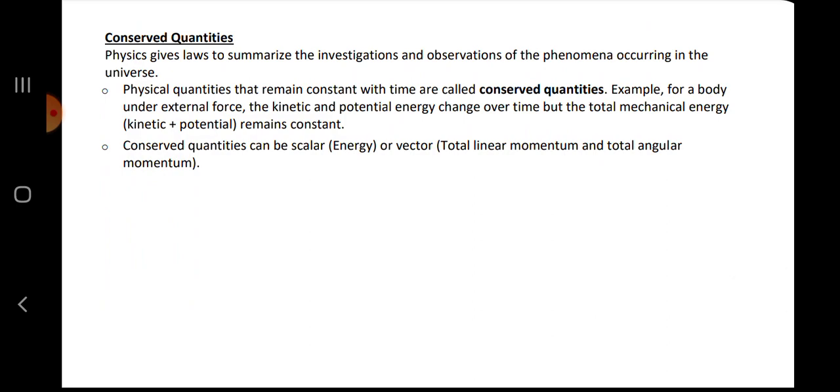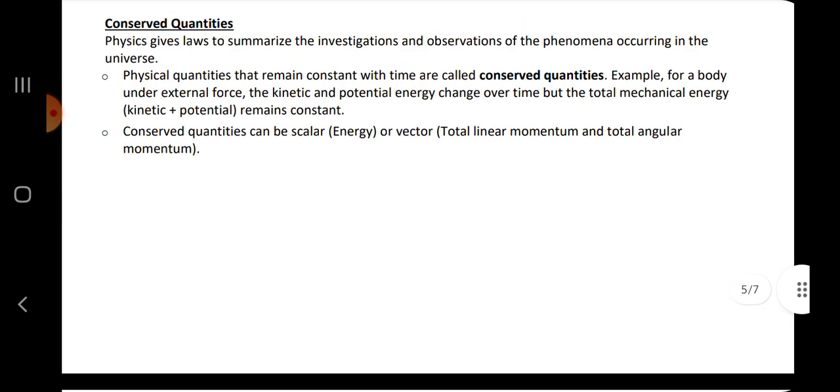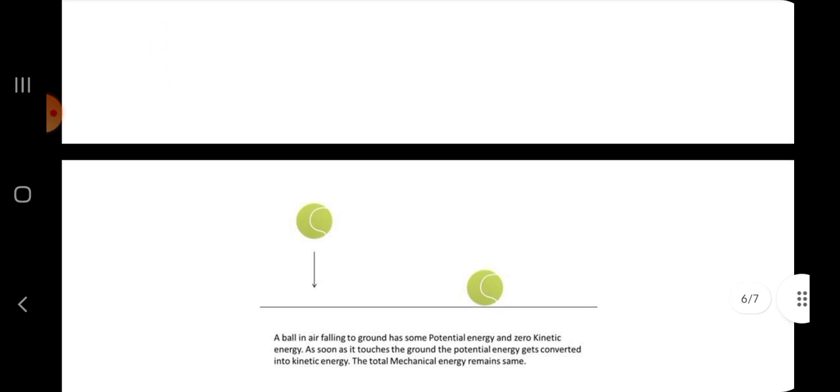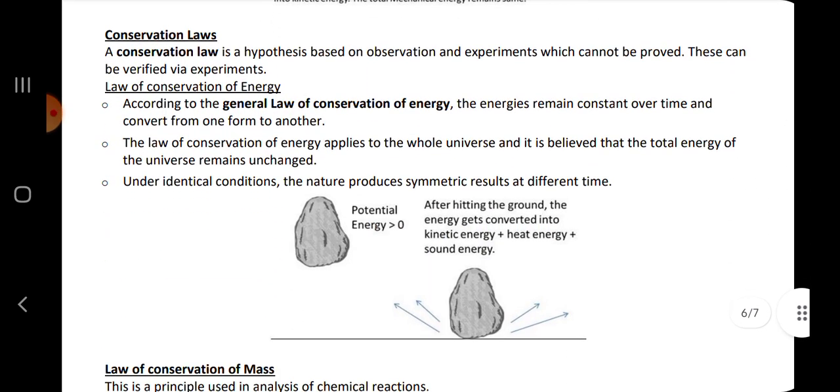Conserved quantities. Physics gives laws to summarize the investigation and observation of the phenomena occurring in the universe. Physical quantities that remain constant with time are called conserved quantities. Conserved quantities can be scalar or vector. Conservation laws: a conservation law is hypothesis based on observation and experiments which cannot be proved. These can be verified through experiments.